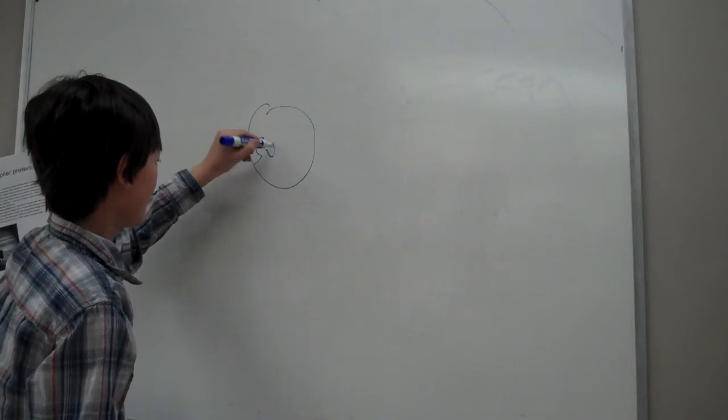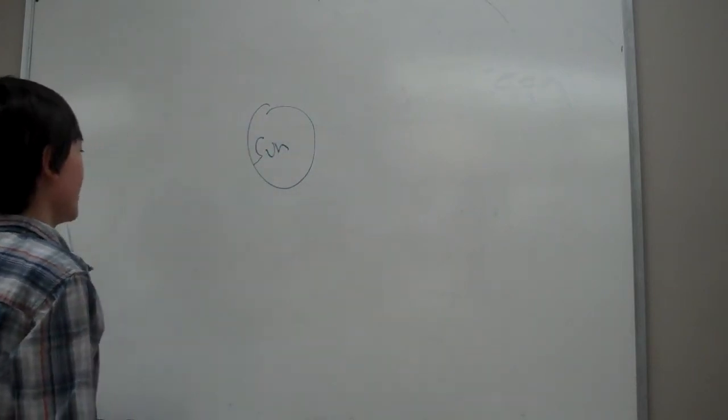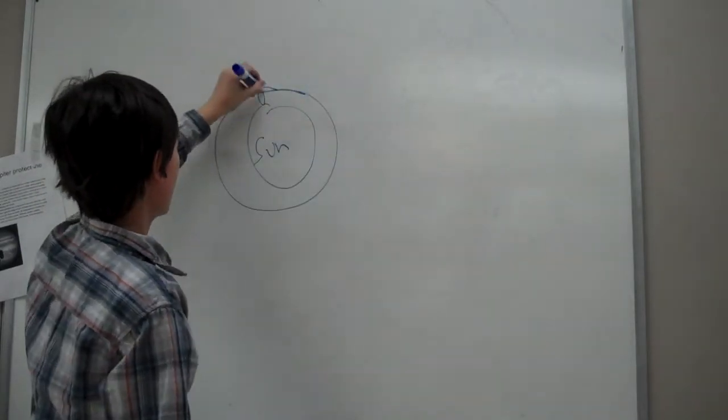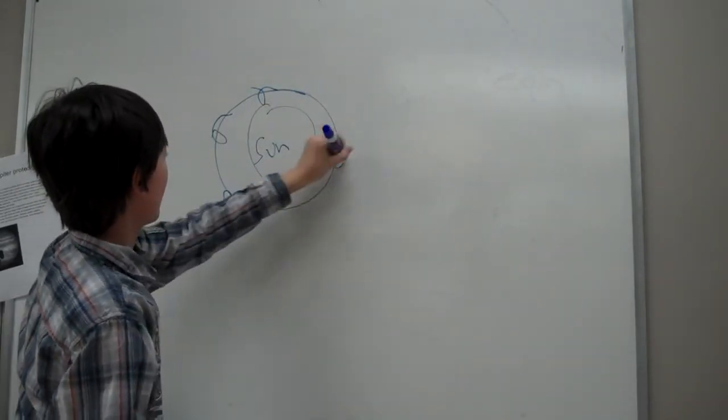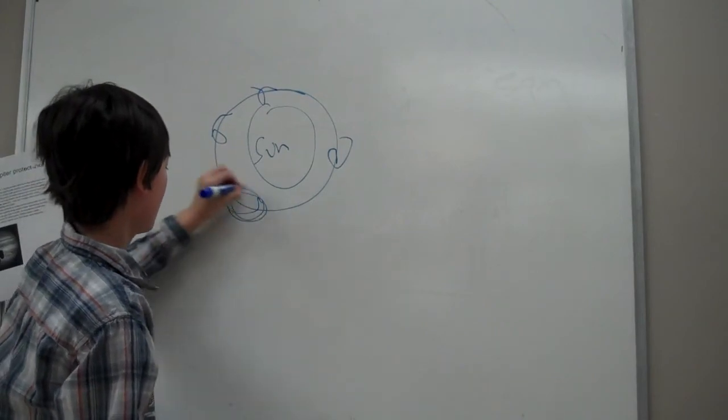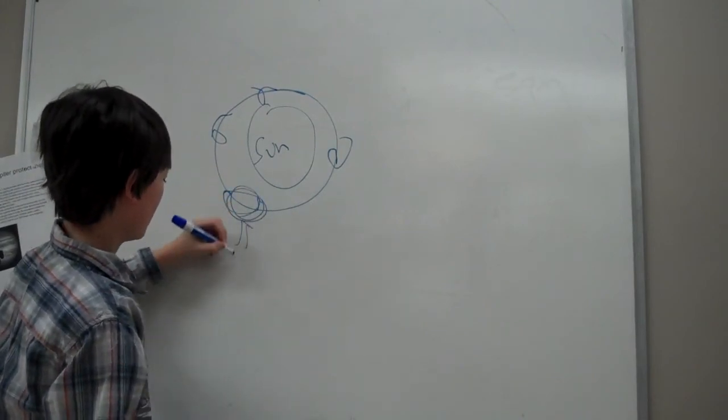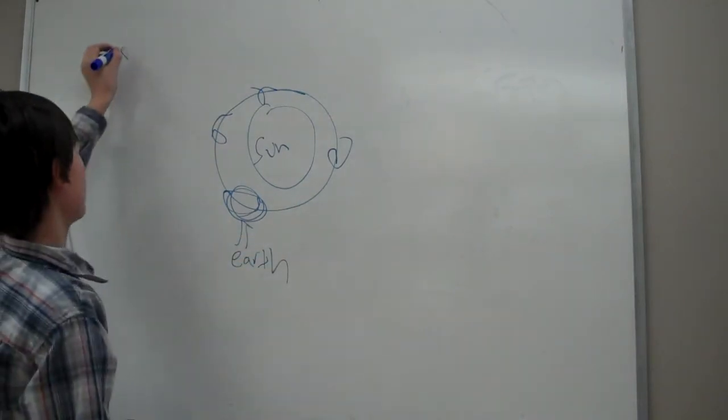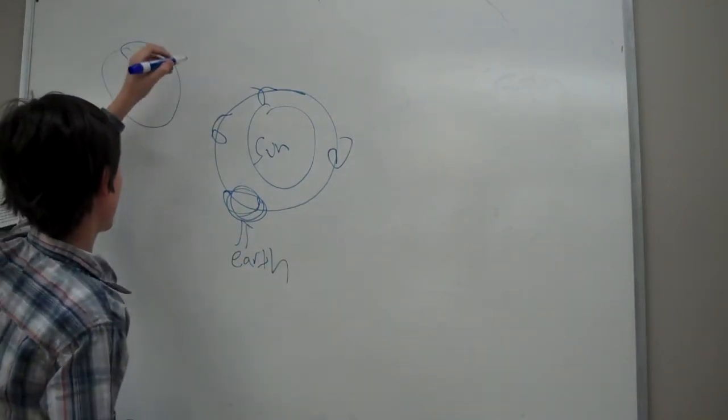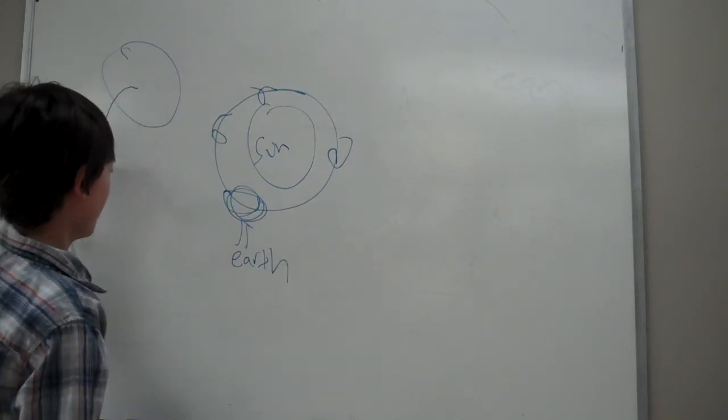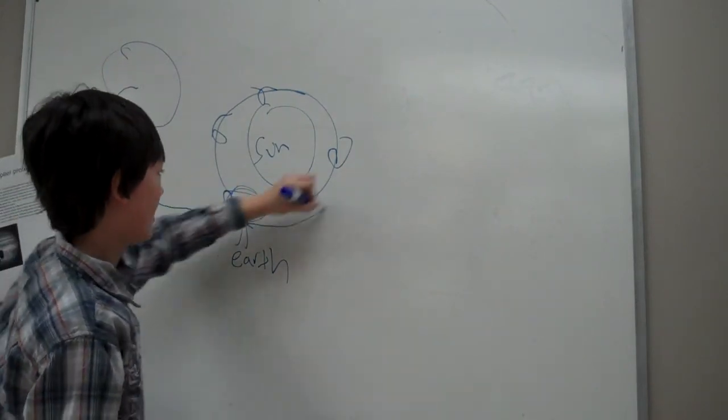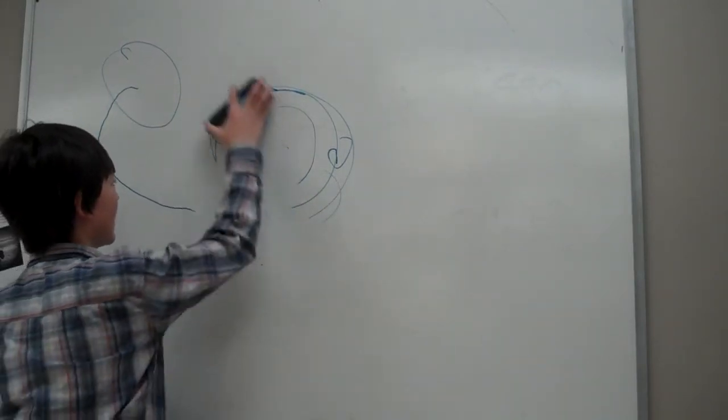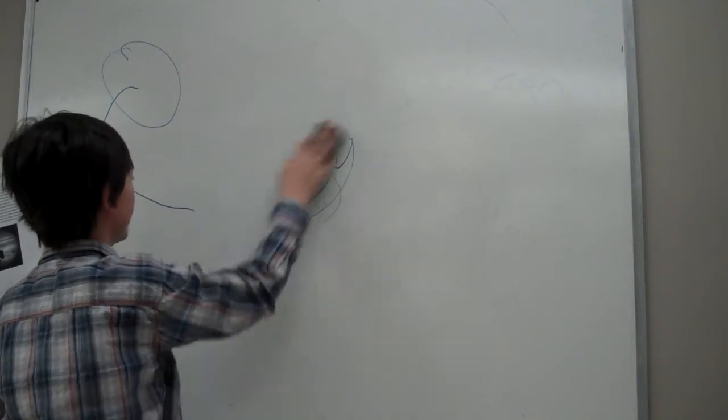So right here we have our Sun in the center of our solar system. And here are the inner planets. And here, right here, we have Earth. So Jupiter may have a comet or asteroid come around and hit one of these planets, including us. That's why Jupiter threatens our Earth.